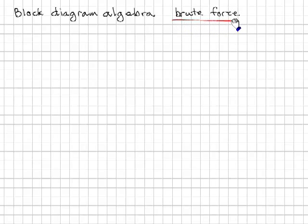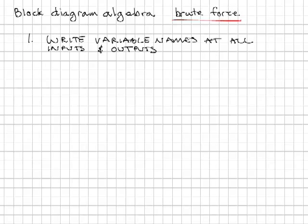This video, we're going to be looking at the brute force method. The brute force method procedure is this: First, write variable names at all the inputs and outputs of the blocks. So if you have a block with input and output, you need to write a variable name on the inputs and on the outputs.